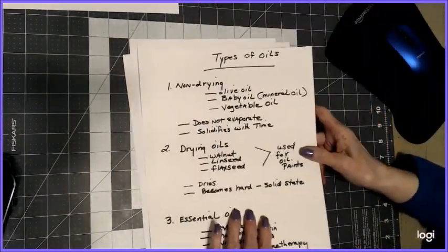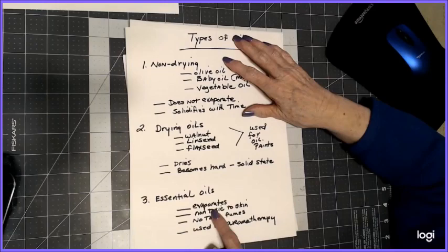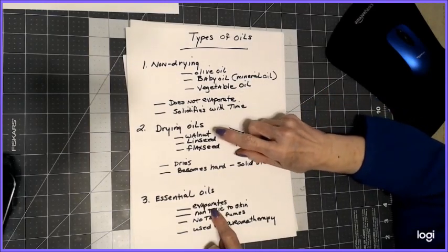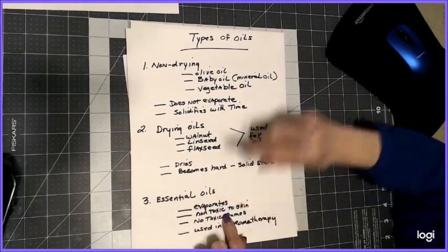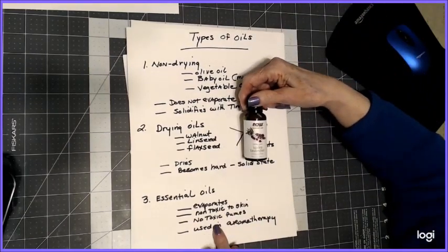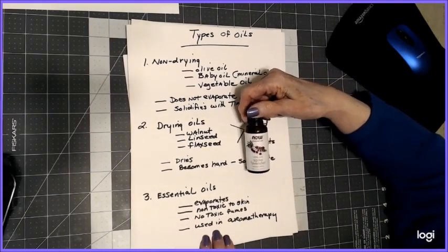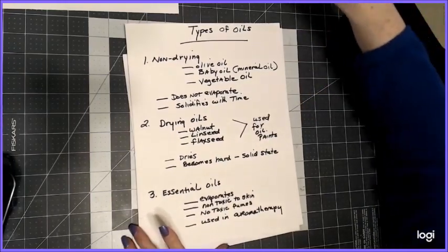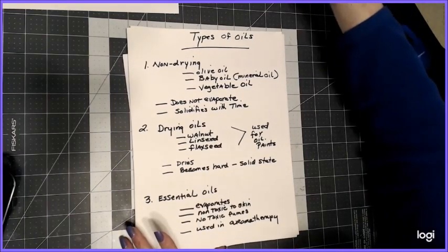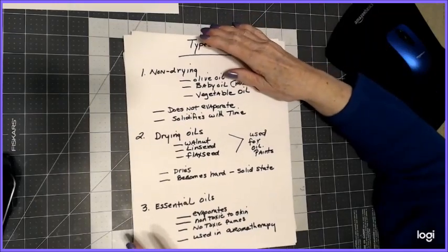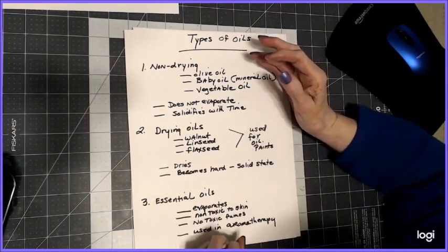Now let's get into the types of oils. These I showed you were essential oils. They evaporate just like the Gamsol and the turpentine, the mineral spirits, and that's the big feature of them. These are non-toxic to the skin. These essential oils - the spike lavender, the lemon, the lavender, the rosemary - would all be non-toxic and they do blend well with your colored pencils.